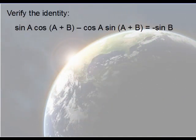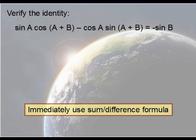Let's try another. Verify the identity. This really isn't an identity, but in other words, just prove that the left-hand side is equal to the right. Again, unless you could combine the terms—in other words, unless you could actually combine A and B together—you'll want to immediately use the sum and difference formula.